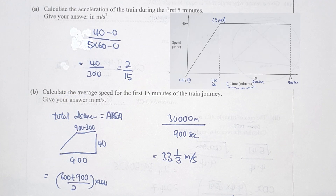For the last part, a speed-time graph: calculate the acceleration using the gradient formula. Using points (0, 0) and (5, 40), and converting time from minutes to seconds so the unit qualifies as metres per second squared, the answer is 2 over 15.